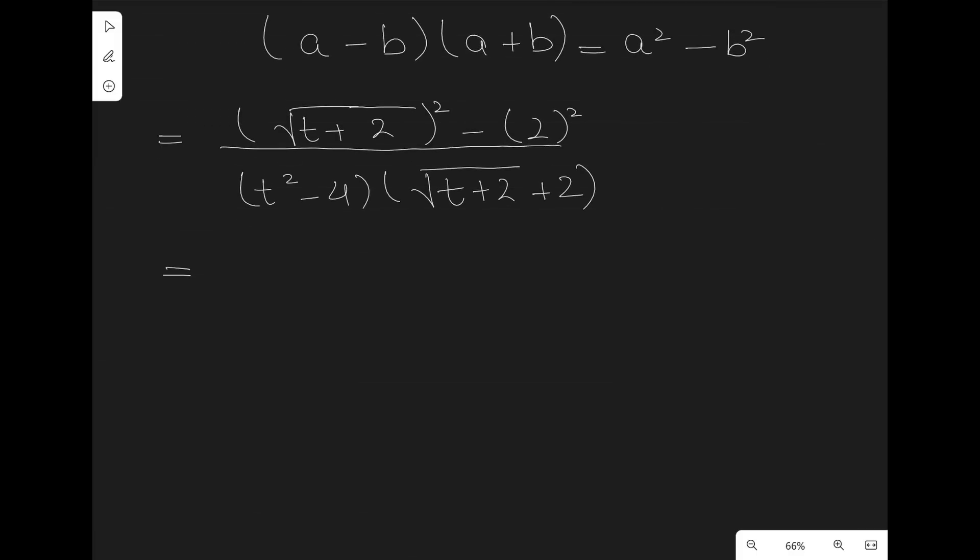Well, we have the square root and the square, so we can just cancel that out and we can write it as t + 2 - 4.